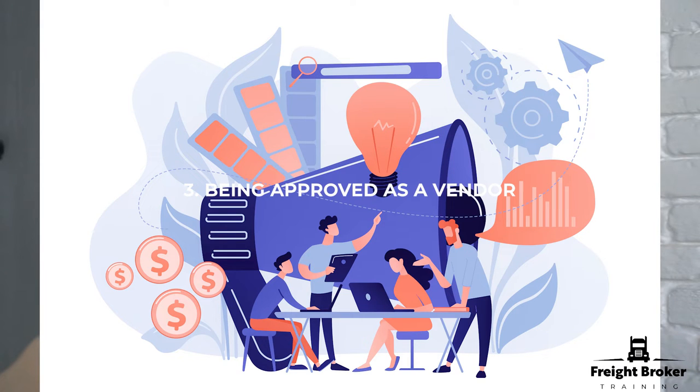Step number 3: Assuming that the shipper accepts your quote and they approve you as a vendor, you will get a tender. What does it mean? It's an offer to move a load. So if you submit rates to a shipper and they then tender you a load, it means they are sending you an offer for a load. You will then need to accept that offer, and now that load is yours. The shipper will check that off their list and now knows you as the broker handling that load.